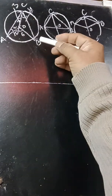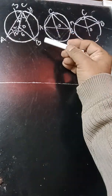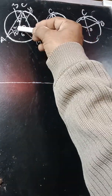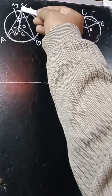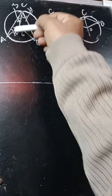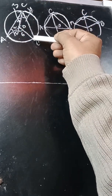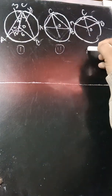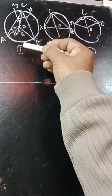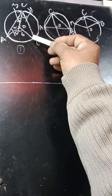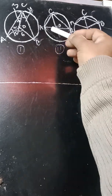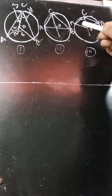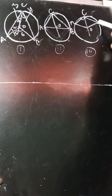Here we have to prove the theorem that the angle subtended by an arc at the center is double the angle subtended by it at any point on the remaining part of the circle. We have taken three cases here. In the first case, AB is a minor arc. In the second case, AB is a semicircle. And in the third case, AB is a major arc.